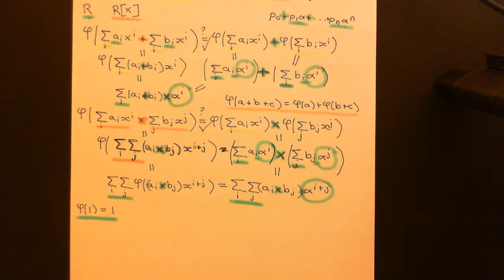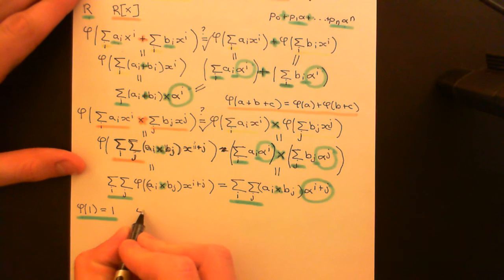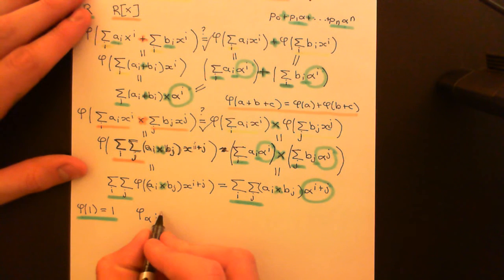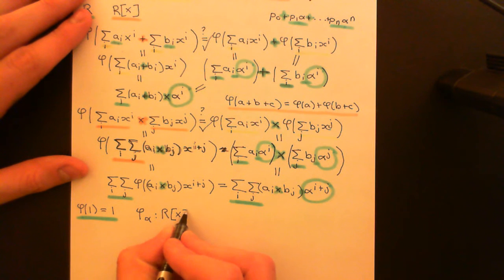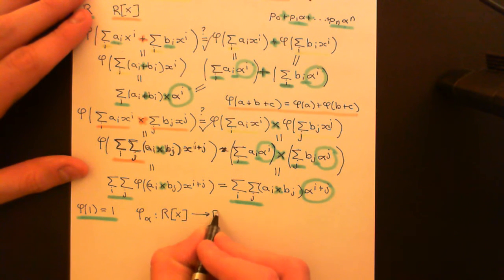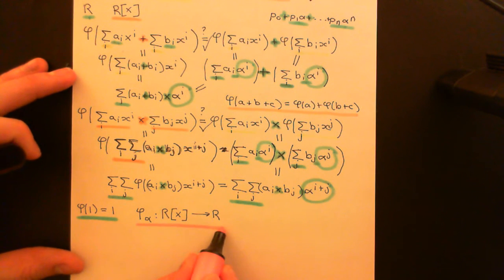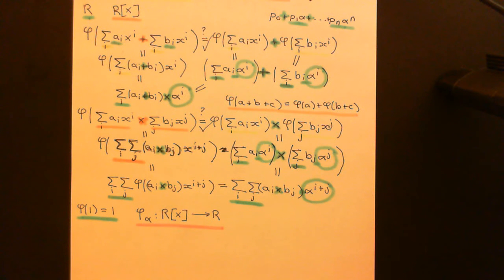Welcome back to this next video in which we are discussing the evaluation homomorphism for polynomial rings. In this next video, what I want to do is push this a little bit further. So what we've now agreed is that this mapping, which I'll go back to calling phi sub alpha, the evaluation homomorphism at the value alpha, from the ring of polynomials with coefficients in the ring capital R to the coefficient ring capital R, is indeed a ring homomorphism. What I now want to do is slightly generalise it to a slightly more difficult but really important to understand case. As I said at the end of the previous video, this concept becomes really important in basic field theory.